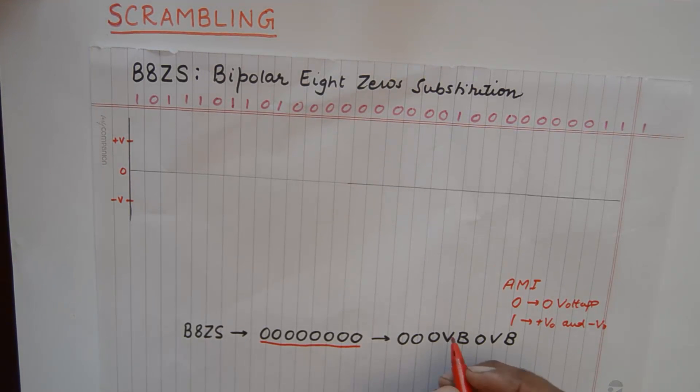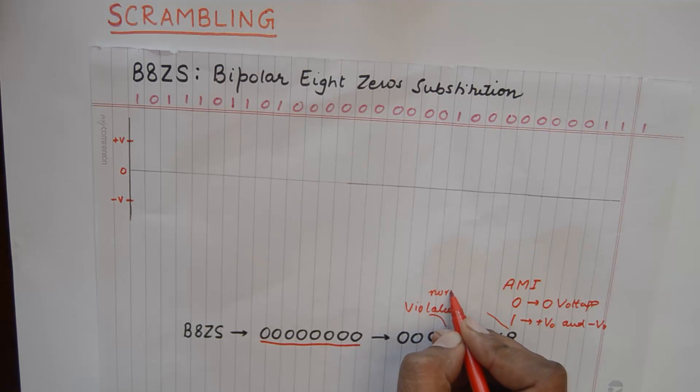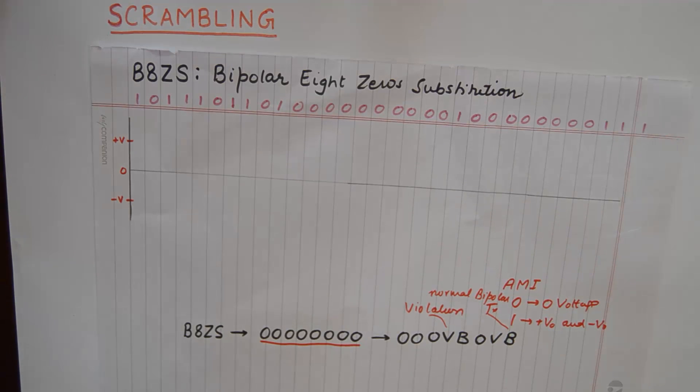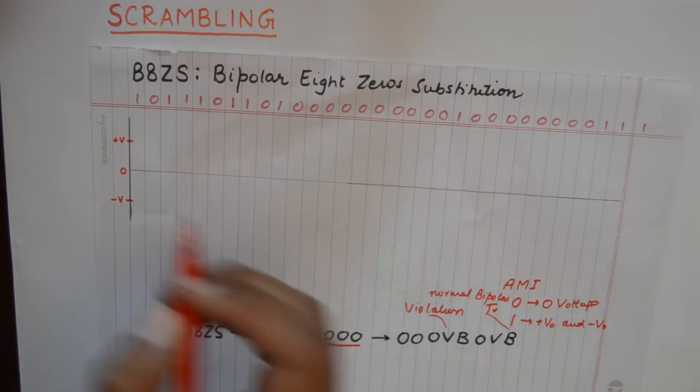A V stands for violation and B stands for normal bipolar transition. A normal bipolar transition is just like an alternating mark because for every one we change the polarity, we just send an opposite polarity to the previous one.